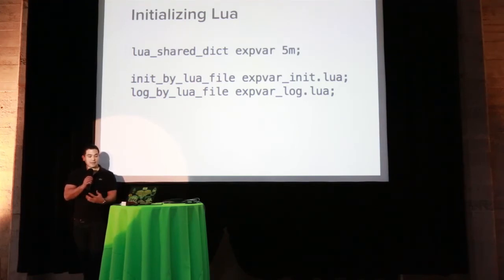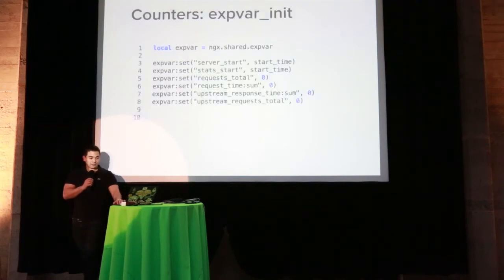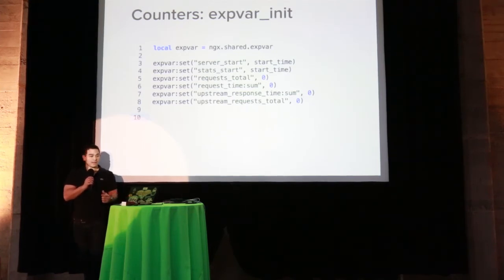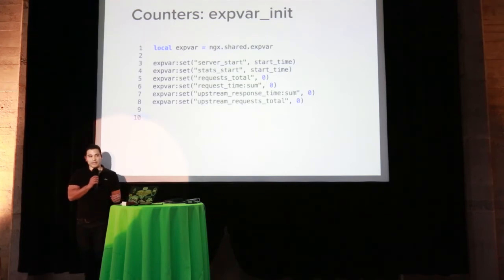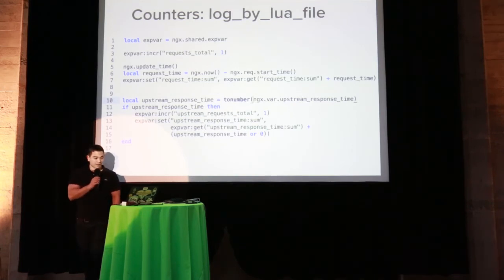You initialize Lua with a shared variable set to five megs, calling init_by_lua_file for setup, and a log_by_lua_file function that's called whenever the logging phase runs. For counters, we track start time, request total, total sum of request time — so we can derive average latency by dividing total time by number of requests. We also monitor upstreams, breaking them out by upstream name and request totals for each one.